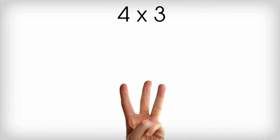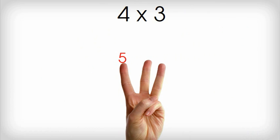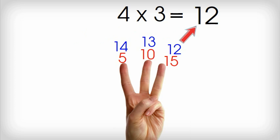So let's say we're going to do four times three. Let's count by threes using our fingers. Five, ten, fifteen. Now we're going to count backwards three times. So we left off at fifteen. Fourteen, thirteen, twelve. That's it. Four times three is twelve.